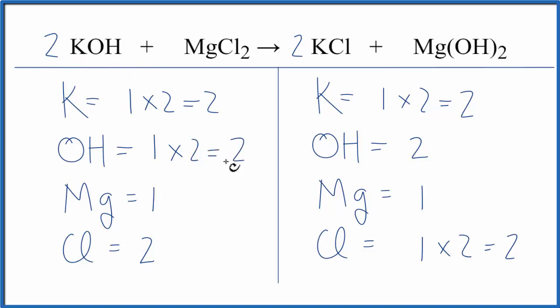And all of a sudden, this equation is balanced. Quite often when you're working with double displacement reactions, you'll count the polyatomic ion as just one item as long as it appears on both sides of the equation.